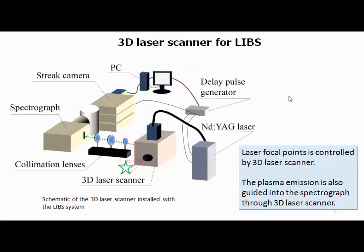This is a schematic of the 3D laser scanning system installed with the LIBS system. The laser focal point is corrected by the 3D laser scanner. The plasma emission is generated in space, and each plasma emission is reflected back through the scanner and guided into the spectrograph. If any object exists in this area, spectroscopic observation is possible with this LIBS system.